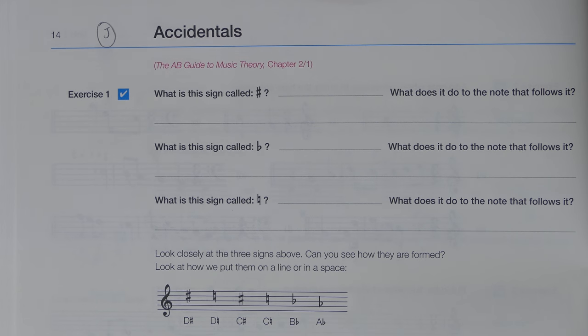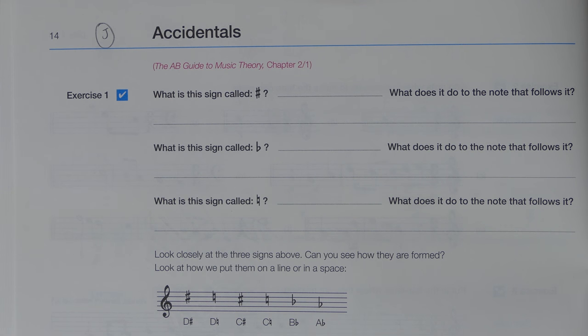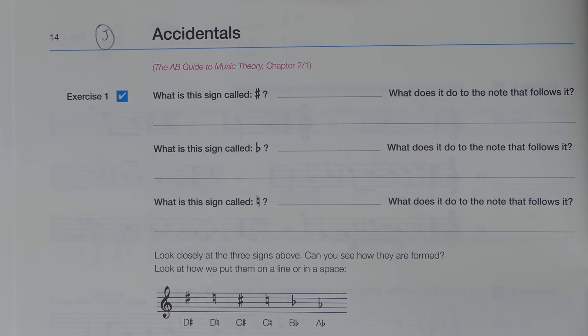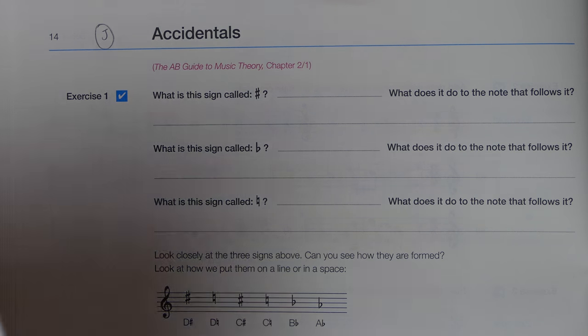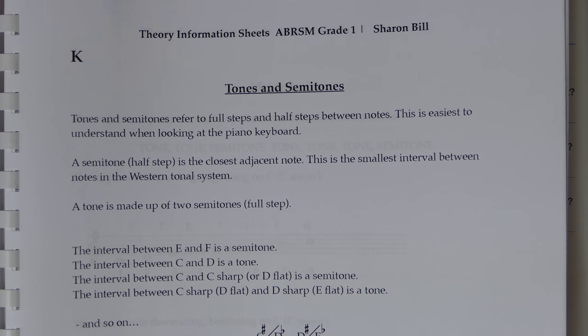You will need a pencil and an eraser for this. So before we start talking about sharps, flats and natural signs we just need to pop ahead to sheet K and we just need to think about tones and semitones for a moment.